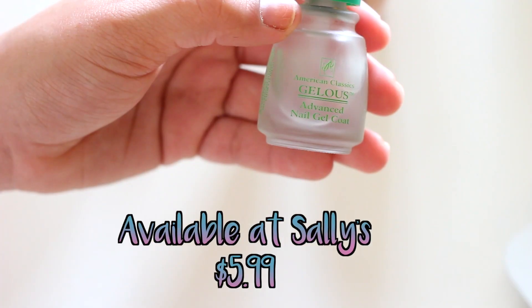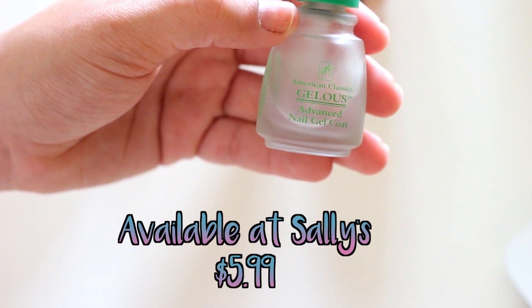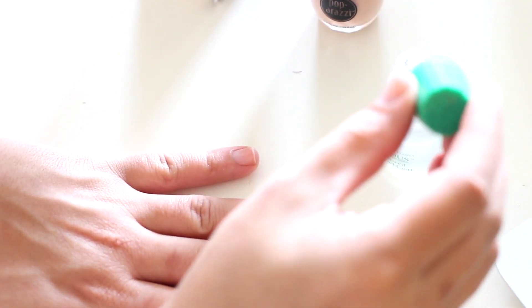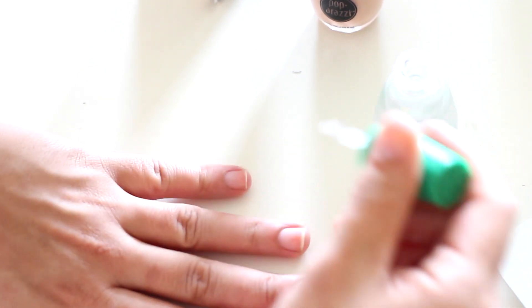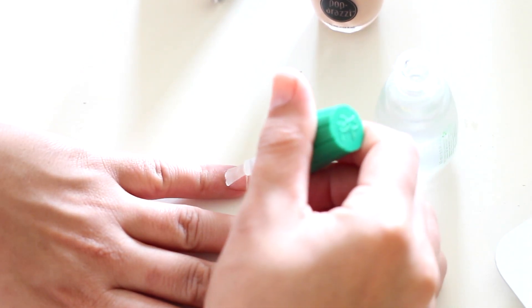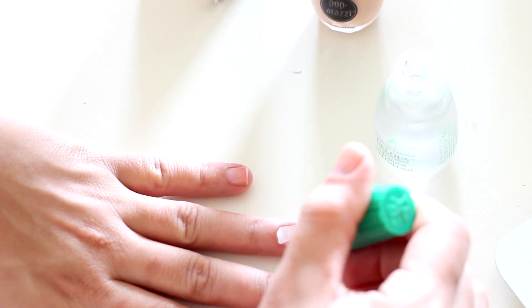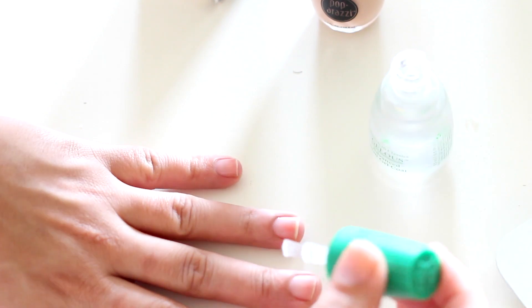We're going to be using the American Classic Gelous Advanced Gel Nail Coat. This is what's going to make your nail polish last. I start with one very thin coat of this first. It's important that the coats are thin. You want to make sure you're wiping off both sides of the brush and just using the tiniest amount. You want to build up the thickness of the polish, so you don't want to do just one big thick coat. You want to do a couple thin layers of this. This is what makes it last for a really long time, like up to a week, maybe a week and a half.